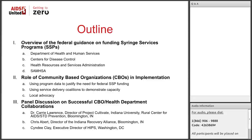The webinar today is organized in three different parts. The first offers an overview of various federal guidance on funding of Syringe Services Programs. The second explores the role of community-based organizations in the implementation of SSPs. And the third will feature a panel discussion among community-based organization representatives from Indiana and Washington, DC.